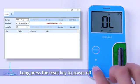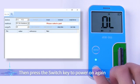Long press the reset key to power off, then press the switch key to power on again, and all settings will be restored to the factory setting mode.